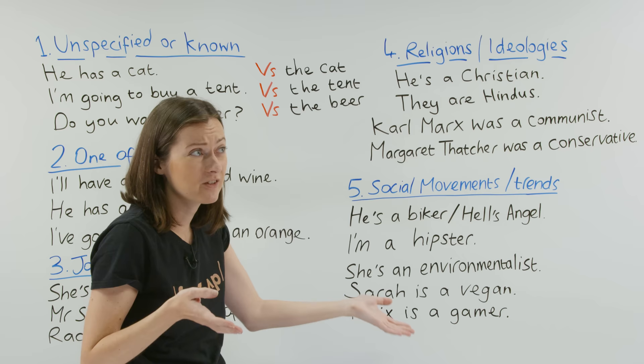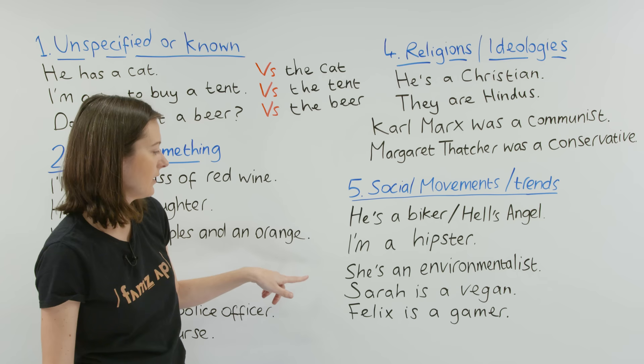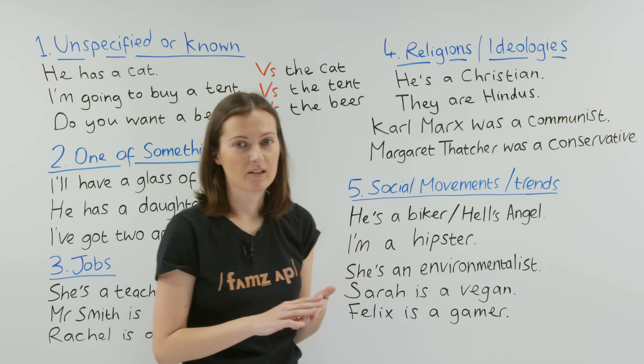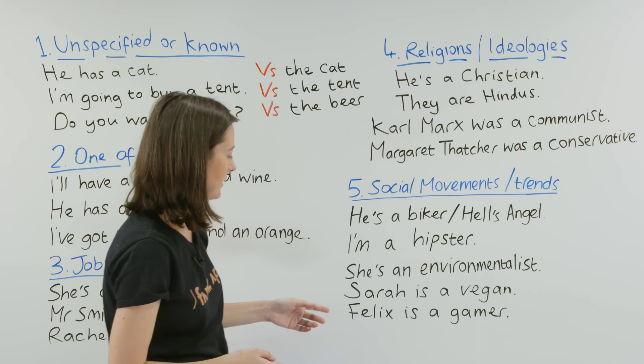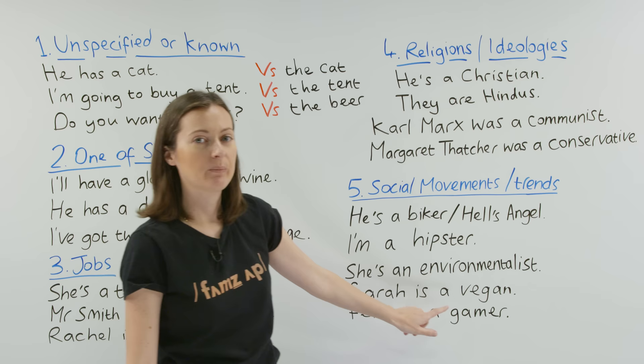More examples: 'She's an environmentalist.' 'Sarah is a vegan.' Because she's a vegan, she doesn't eat cheese — she doesn't eat anything made from an animal. And the last example: 'Felix is a gamer.' Felix is PewDiePie on YouTube, so we can also say PewDiePie is a gamer.